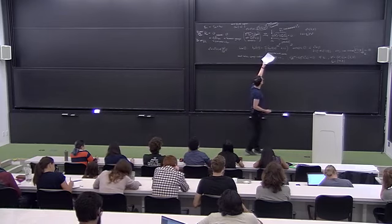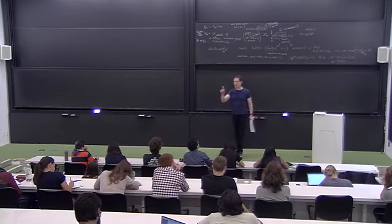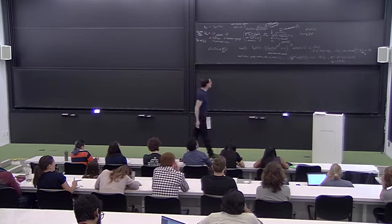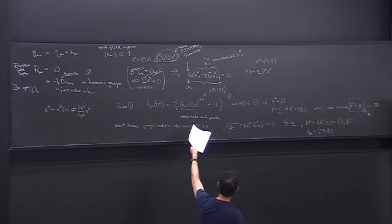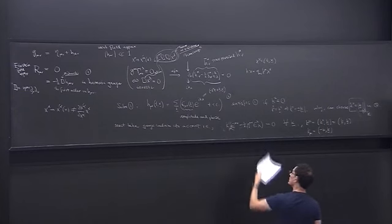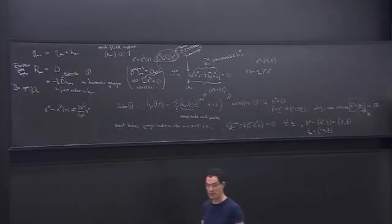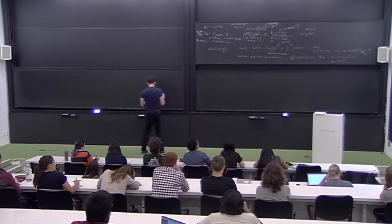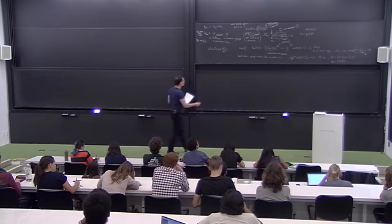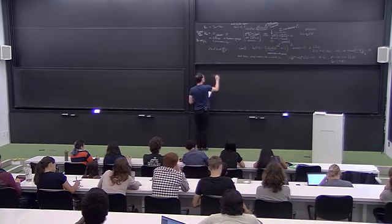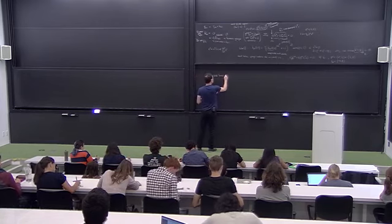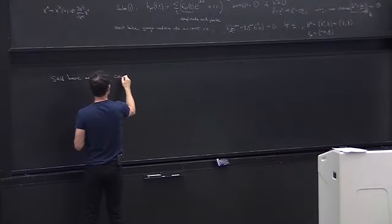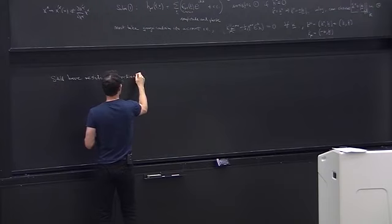Superficially you have ten complex numbers for every k vector. But with these four conditions, you actually only have six complex numbers for each k vector. In a moment we'll see we really only have two, because we still have residual coordinate freedom.